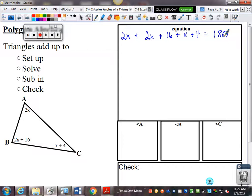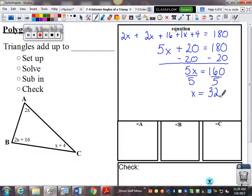Okay. So, 2x plus 2x plus 1x is 5x. And, then I have a plus 16 and a plus 4, that's a plus 20, equals 180. Two-step.